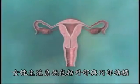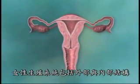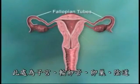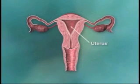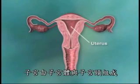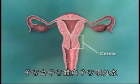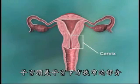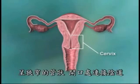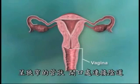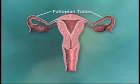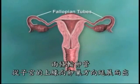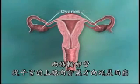The female reproductive system includes both external and internal structures. Seen here are the uterus, the fallopian tubes, the ovaries, and the vagina. The uterus is comprised of the corpus, or main body, and the cervix. The cervix is the lower, narrow part of the uterus, which forms a canal that opens into the vagina and can be seen during pelvic examination. The two fallopian tubes extend from the upper edges of the uterus toward the ovaries.